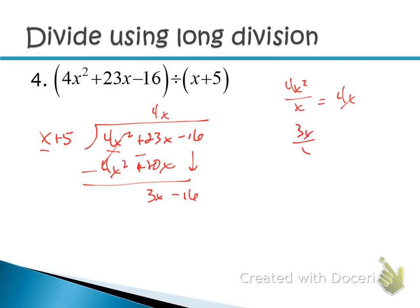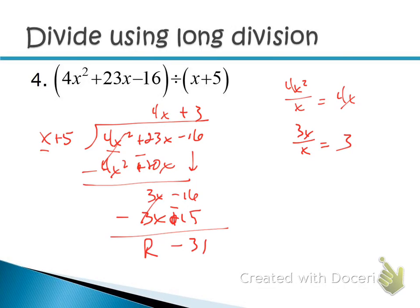Divide again: 3x divided by x gives 3. Put +3 on top. Multiply down: 3 times x is 3x, 3 times 5 is 15. Change the signs. You get 0 and −31. No more terms to bring down, so −31 is the remainder. We could write just R−31, but we'll write it as a fraction — take the remainder −31 in the numerator and put x + 5 in the denominator, adding it at the end.